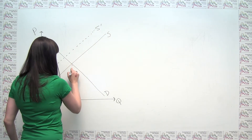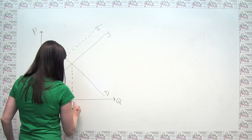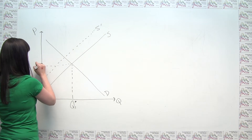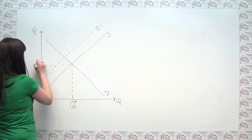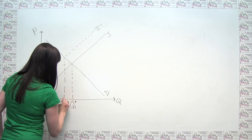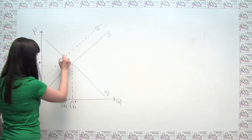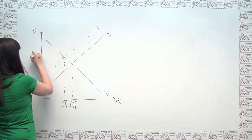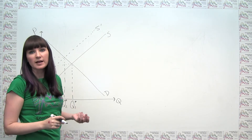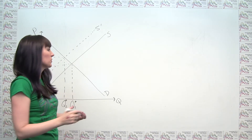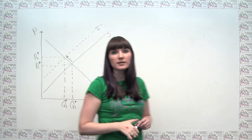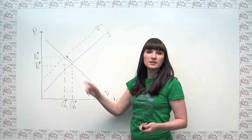We can confirm this by labeling Q1* and P1* at the original equilibrium, and Q2* and P2* at the new equilibrium. We can see a change in equilibrium that goes up and to the left, as expected — consistent with a decrease in supply.